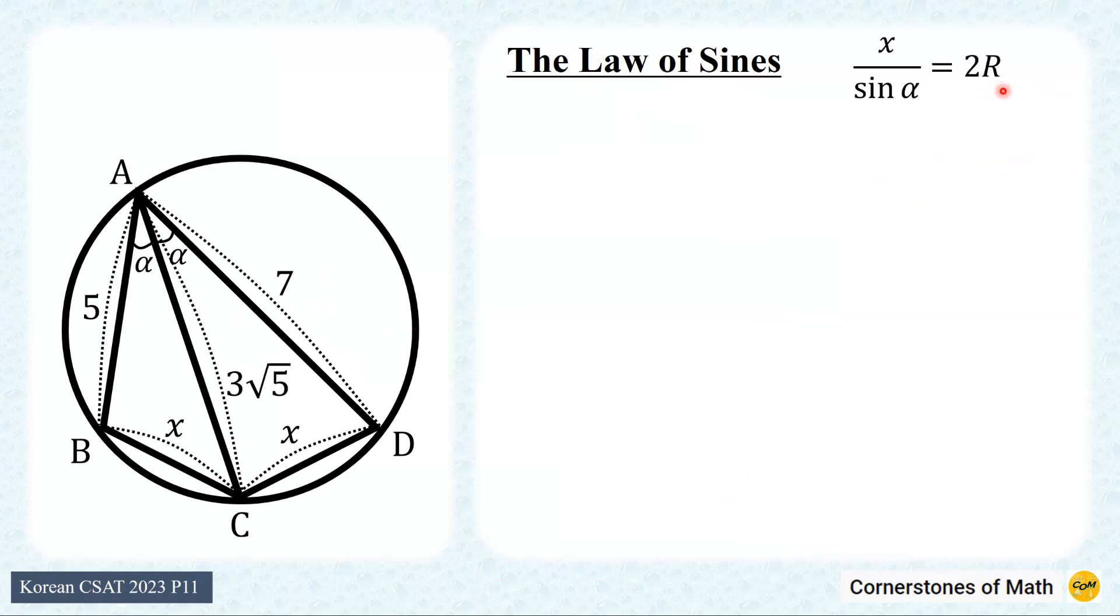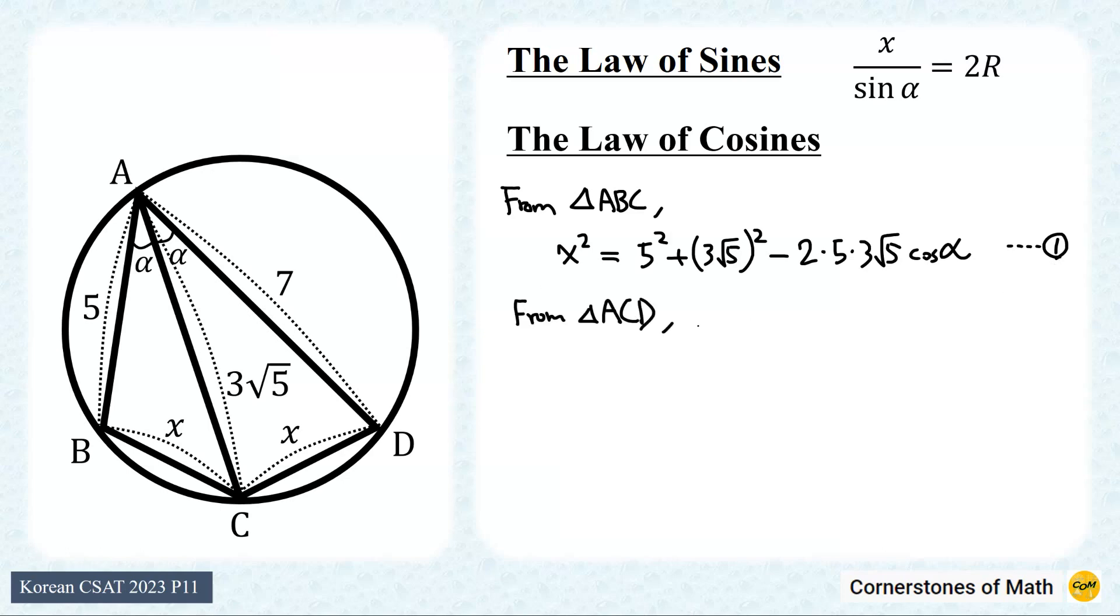Alright, we know that we can find the radius of the circumcircle using the law of sines. So now we have to find these X and alpha. And that can be done by using another famous trigonometric law for triangles, the law of cosines. First, applying the law of cosines to triangle ABC is x square equals 5 square plus 3 square root of 5 square minus 2 times 5 times 3 square root of 5 cosine alpha. So we have our first equation. Next, applying the law of cosines to triangle ACD is x squared equals 3 square root of 5 squared plus 7 squared minus 2 times 3 square root of 5 times 7 cosine alpha. And so we have the second equation.